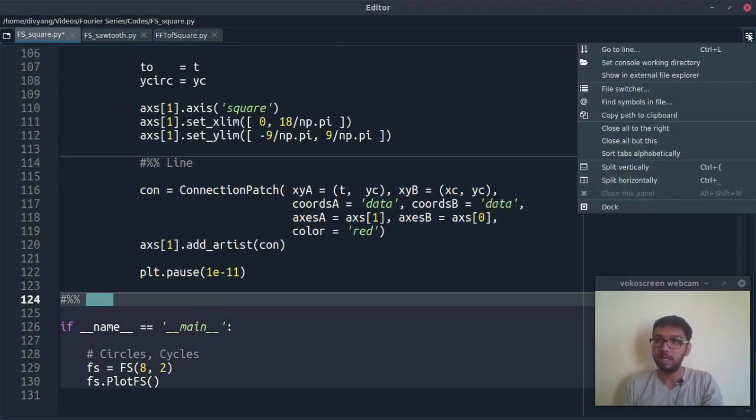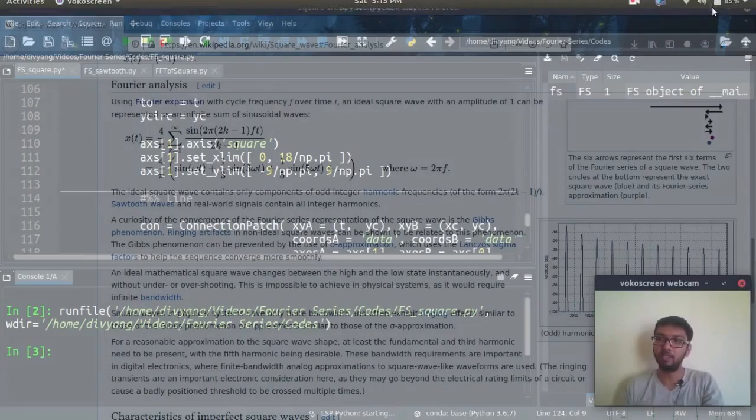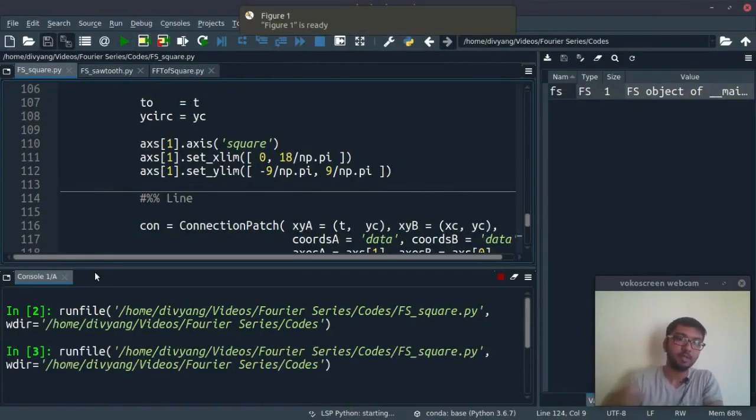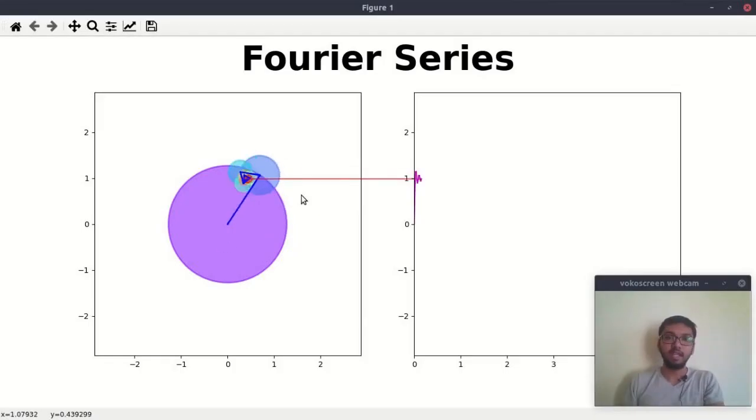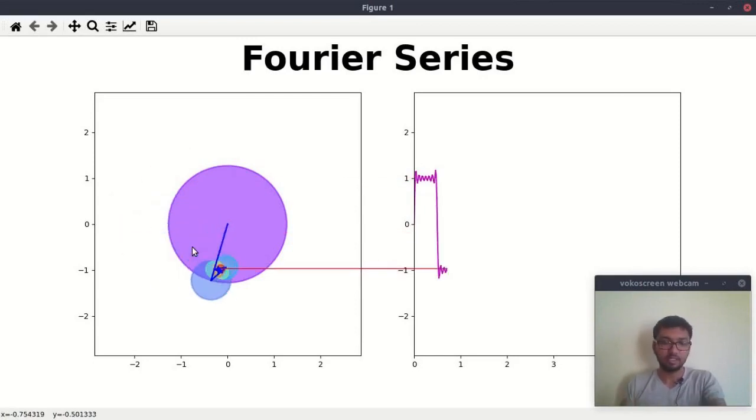This code will generate that red line between two subplots. Let's run this code and see what we get. Yes, we are getting the same thing. As you can notice, we have eight circles as I have given here.